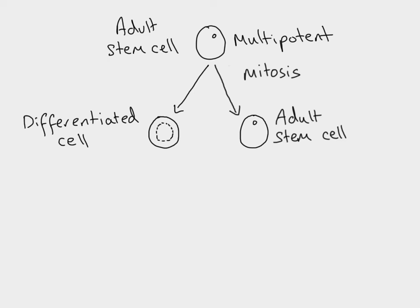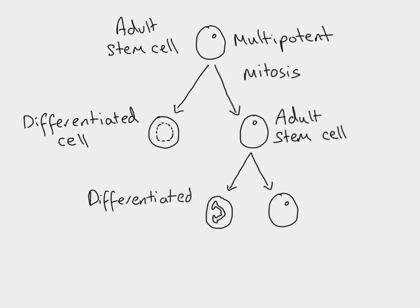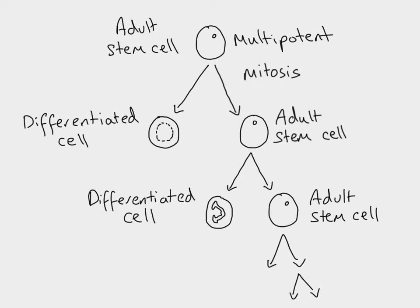This adult stem cell is able to divide by mitosis, and when it does, one daughter cell can differentiate into a different but closely related cell type, while the other stays as an adult stem cell. This continues, giving a sort of continuation of our adult stem cells. They can't keep doing this indefinitely, but they can divide for a very large number of divisions — and this is how the body is able to repair damaged tissue and replace damaged or dead cells.